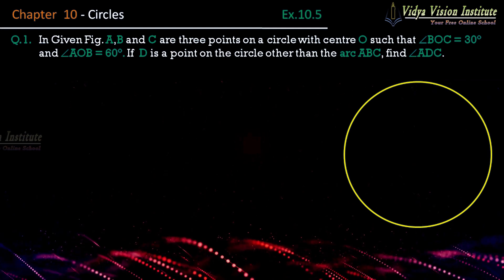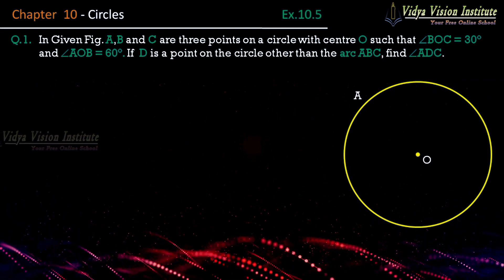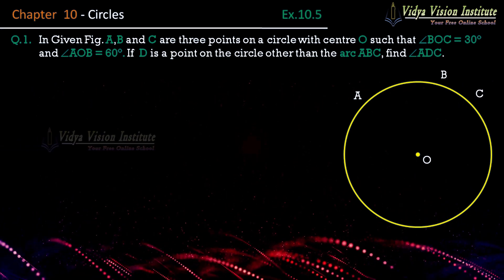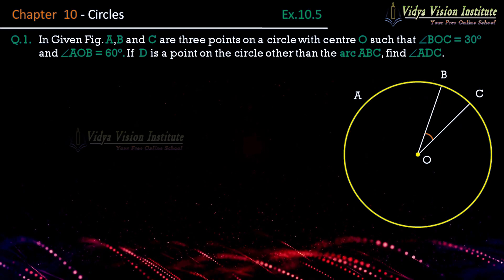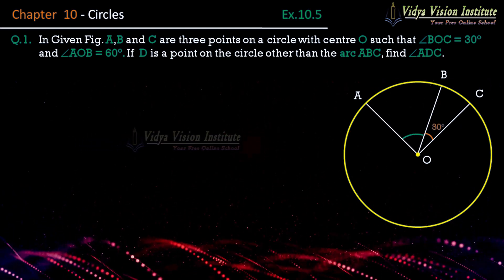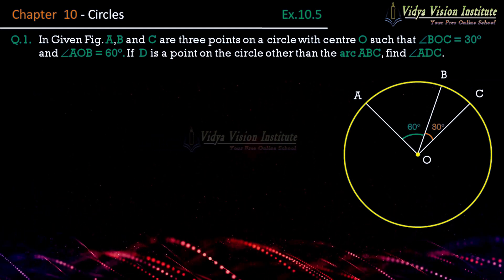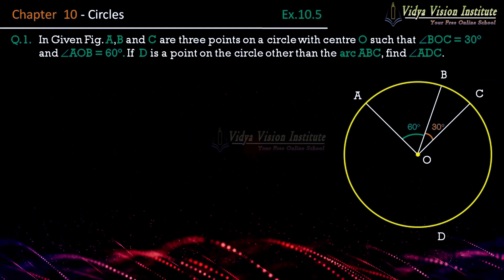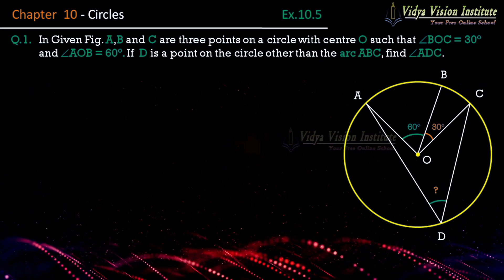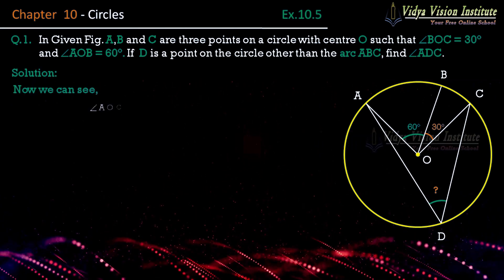Iske liye sabse pehle figure draw kar lete hain. Maan lijiye yeh ek circle hai, iska yeh center hai O. Ab is circle pe A, B aur C ye teen points hain, such that angle BOC is equal to 30 degrees and angle AOB is equal to 60 degrees. Ab circle pe major arc pe koi ek point hai D, aur hume pata karna hai angle ADC ki value kya hogi.